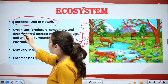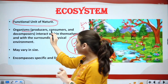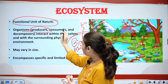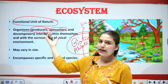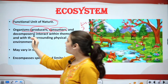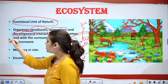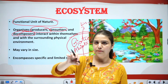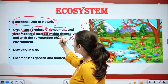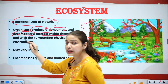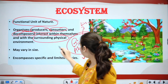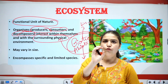Now, organisms comprise producers — those who can produce their own food — then we have consumers, who are dependent on producers, on animals or on plants, and then we have decomposers, who feed on dead plants or dead animals. When these organisms interact within themselves and with the surrounding physical environment, that forms our ecosystem.